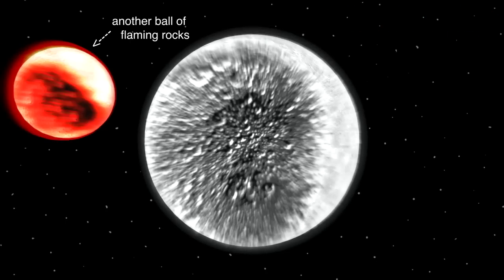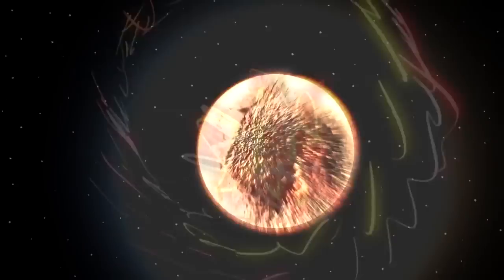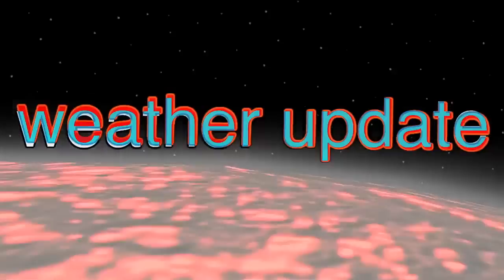Holy shit, we just got hit with another ball of flaming rocks and it kind of made a mess, which is now a moon. Weather update: It's raining rocks from outer space. Weather update: Those rocks might have had water inside them and now there's hot steam in the sky.